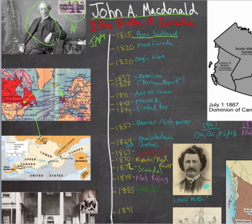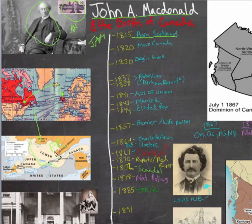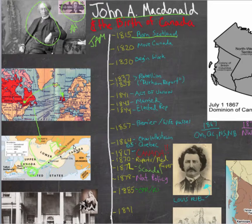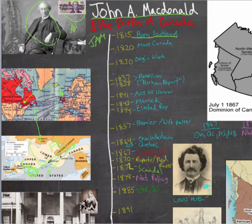Down here is what Canada looked like at the time. It was split into two sections: Lower Canada and Upper Canada. Lower Canada was French-speaking, while Upper Canada was English-speaking. And if you're confused as to why Lower Canada looks like Upper and Upper looks like Lower, it's because the point of reference is Lake Ontario, and the water goes down into the St. Lawrence Seaway — this is downstream, and upstream is the opposite way. That is actually why it's called Upper, and Lower Canada is called Lower.